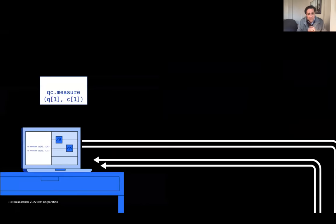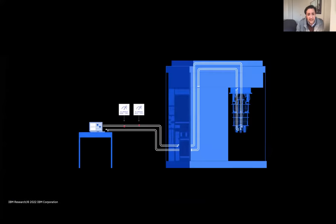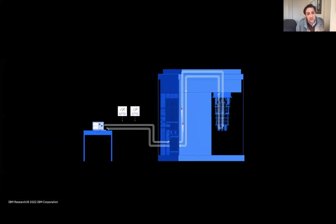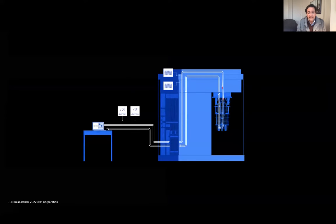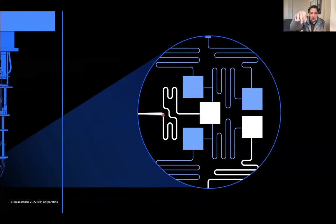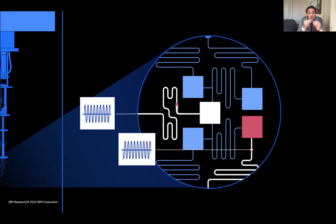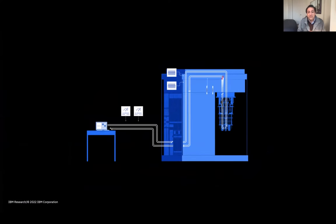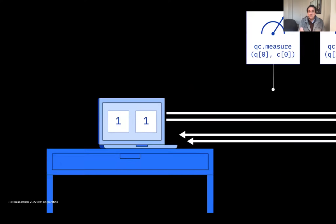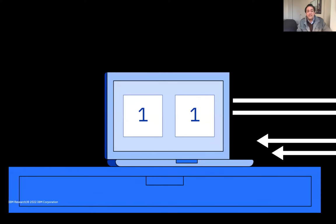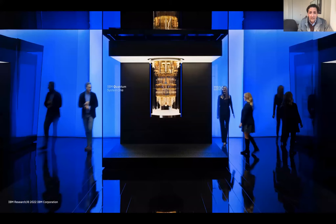You could sit in front of your computer, write a program, click run, and execute on a quantum computer. You type your quantum circuit, we send the zeros and ones over the Internet, convert them into microwave pulses at about five gigahertz, send them down a cryostat to the qubits, generate the quantum bits using interference, superposition, and entanglement, perform the quantum computation, get a measurement, amplify the signal, and return the answer to the user — all transparent to the user.